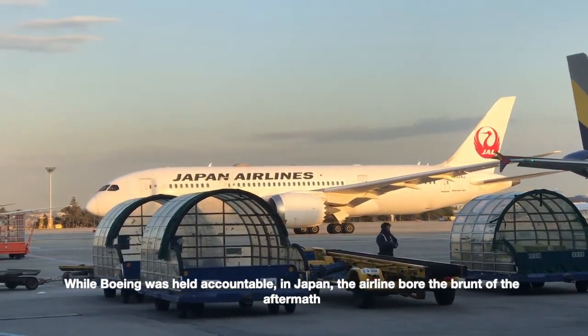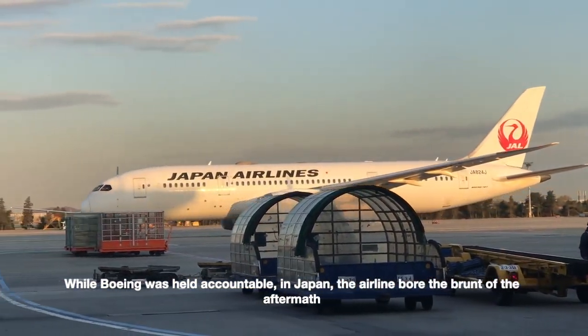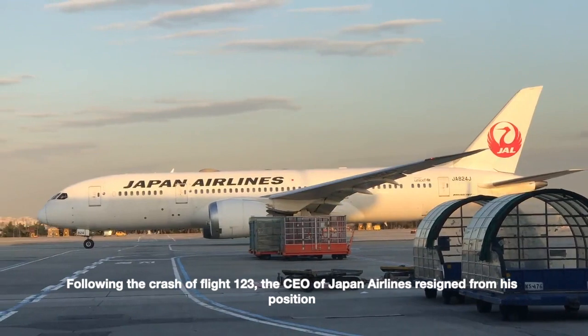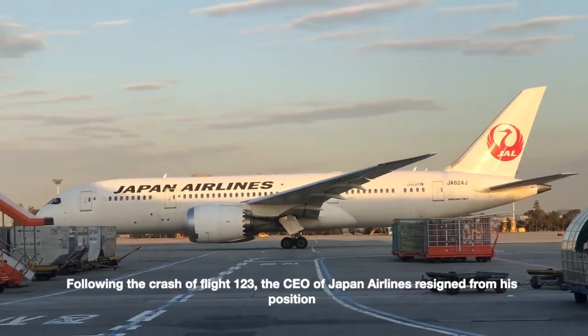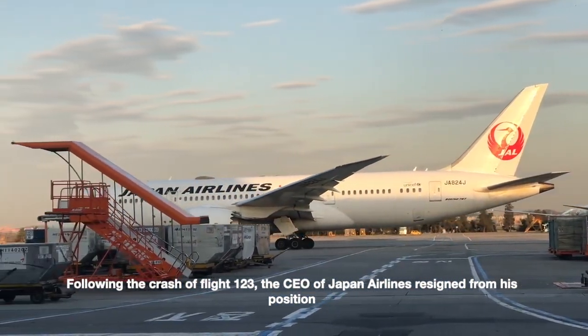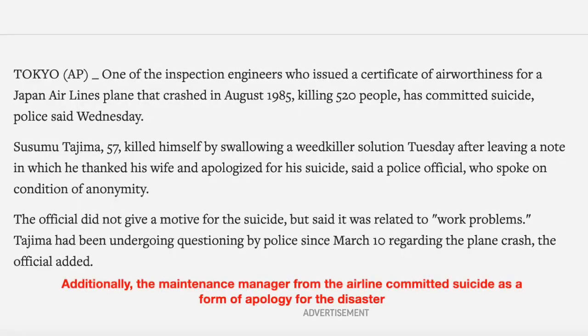While Boeing was held accountable in Japan, the airline bore the brunt of the aftermath. Following the crash of Flight 123, the CEO of Japan Airlines resigned from his position. Additionally, a maintenance engineer from the airlines committed suicide as a form of apology for the disaster.